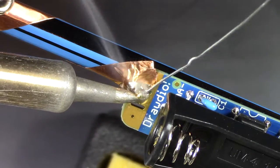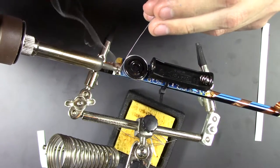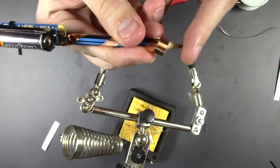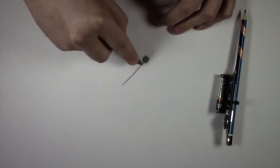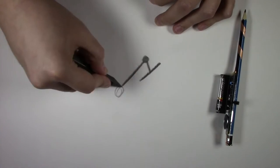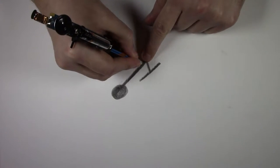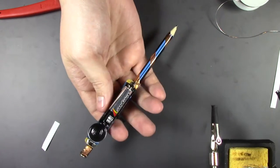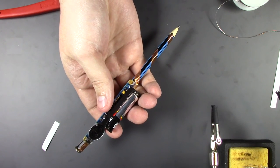Now we're going to just solder the tape to those connections so that it doesn't just accidentally pull off. Put the battery back in, test it, and then you can start drawing with it. And there's your finished Drawdio. Thanks for watching. Let me know if you have any questions in the comments below, and I'll see you next time.